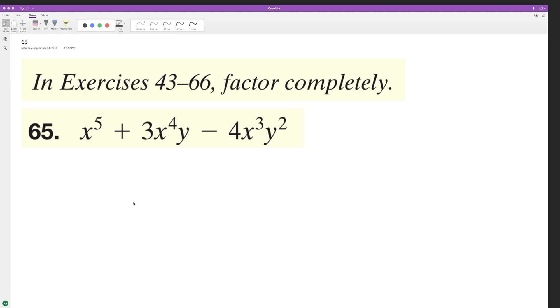Factoring it, the largest common factor we have is x cubed, so pull that out and we end up with x squared plus 3xy minus 4y squared. We can factor this further.